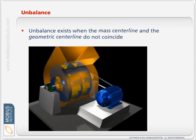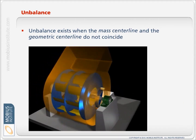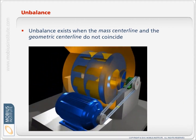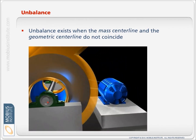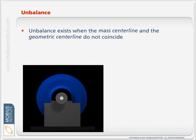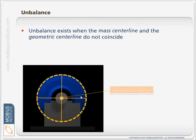Unbalance exists when the mass centerline and the geometric centerline do not coincide. The geometric centerline is the center of geometry, which for our fan should be right through the center of the shaft. If we draw a circle around it, it should, if the machine is designed properly, go straight through the center of our shaft — and that is where it also wants to rotate. That is our geometric centerline.